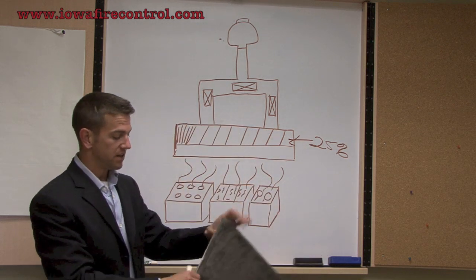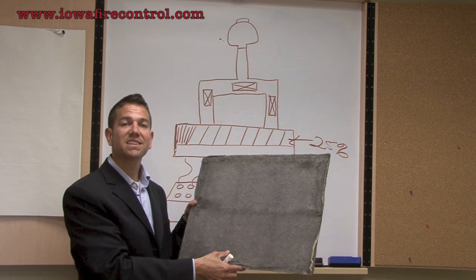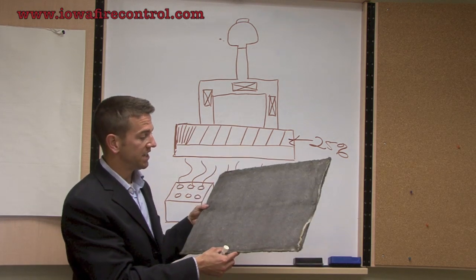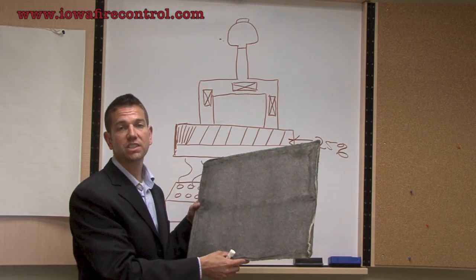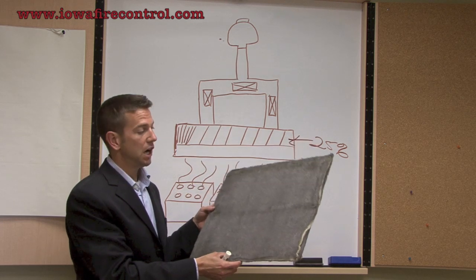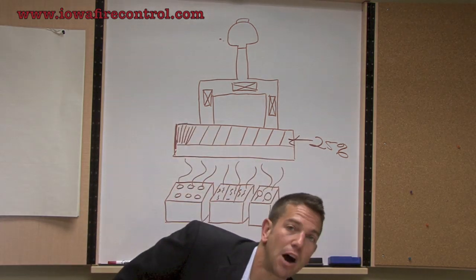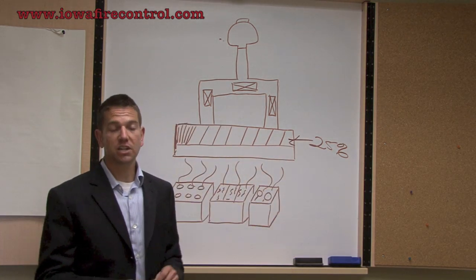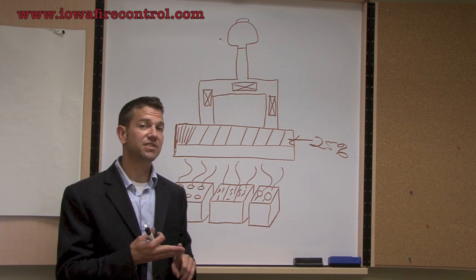This right here is the GLS, the Grease Lock System filter. This is a 16 by 20 inch wool fabric mesh filter that is allowed within the parameters of NFPA, the IMC, and the IFC.